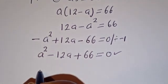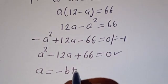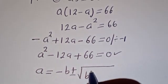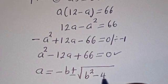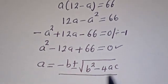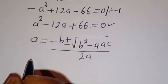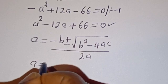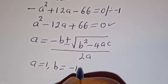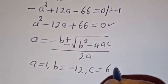The quadratic general formula is given as A equals minus B plus or minus square root of B squared minus 4AC, all divided by 2A. Here A is equal to 1, B is equal to minus 12, and C is equal to 66.